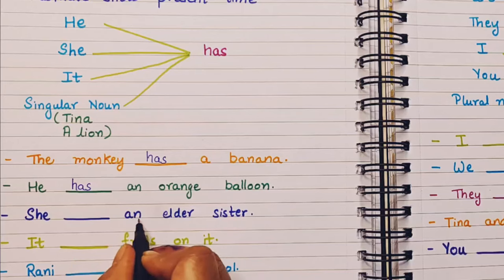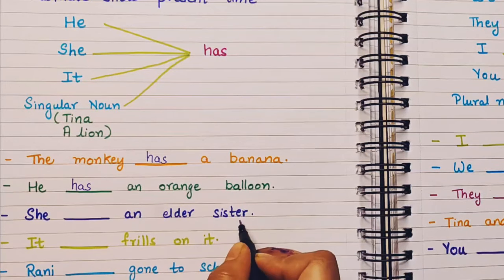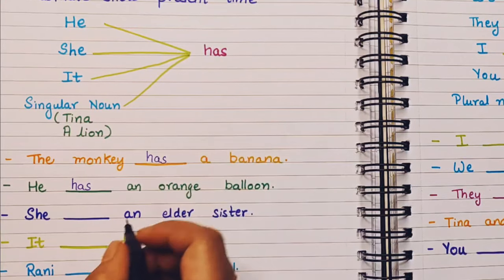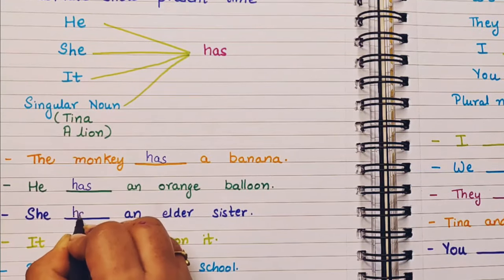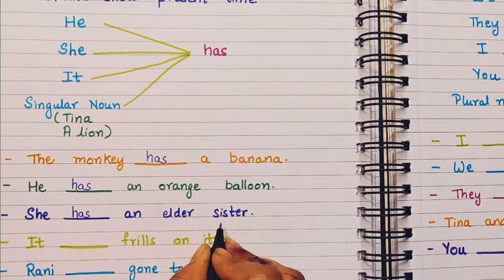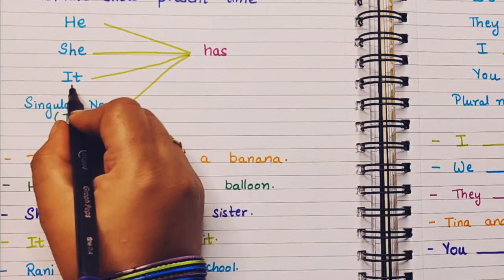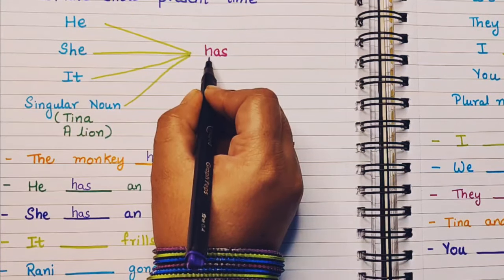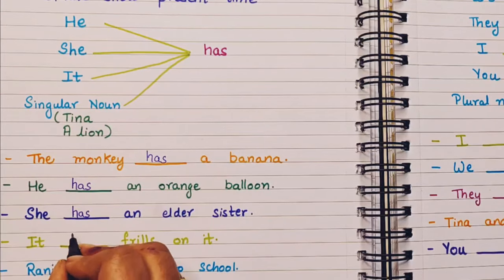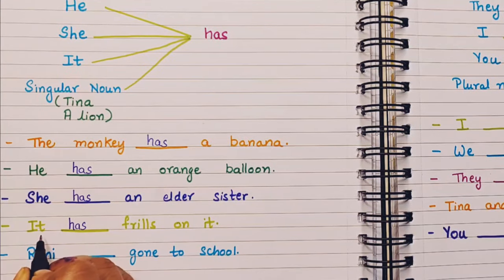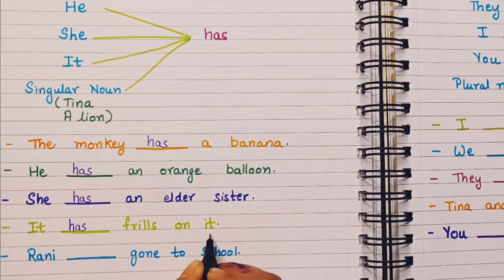Next: she — dash — an elder sister. Along with she, we also use has. And with it, we also use has. It is a pronoun used for animals or things. So it has frills on it.